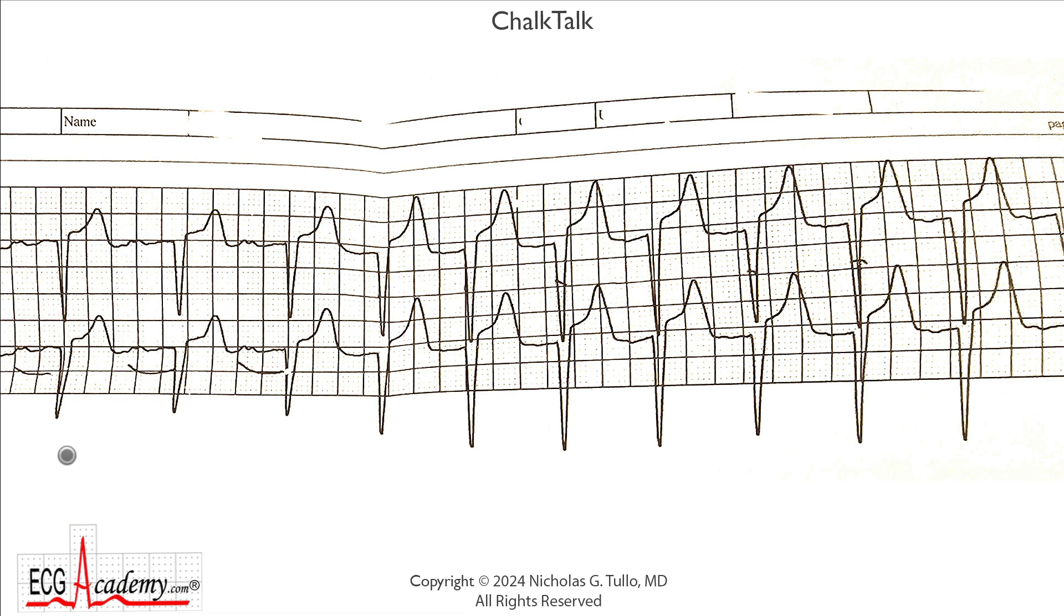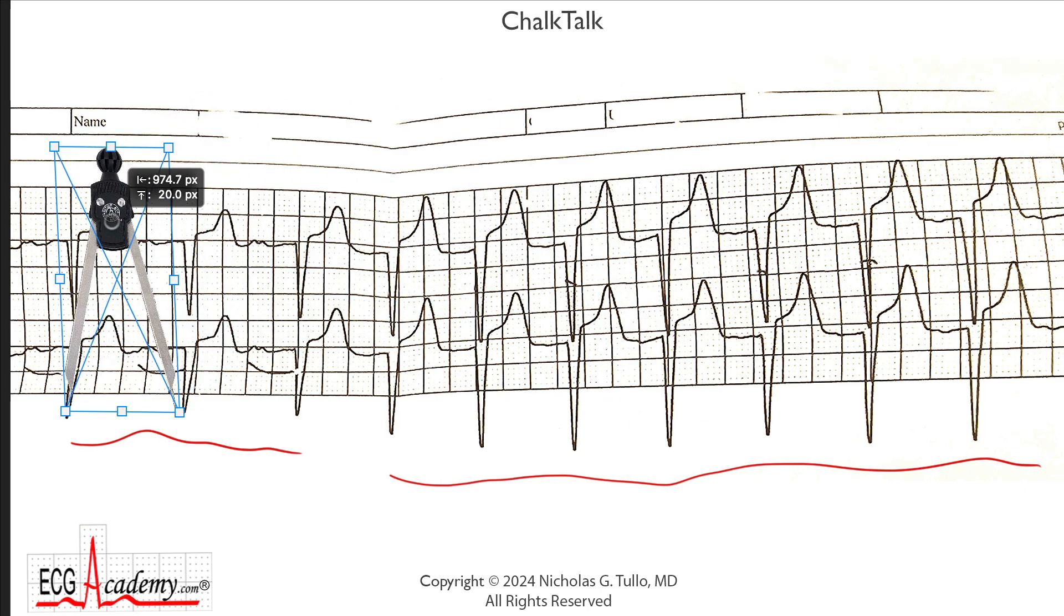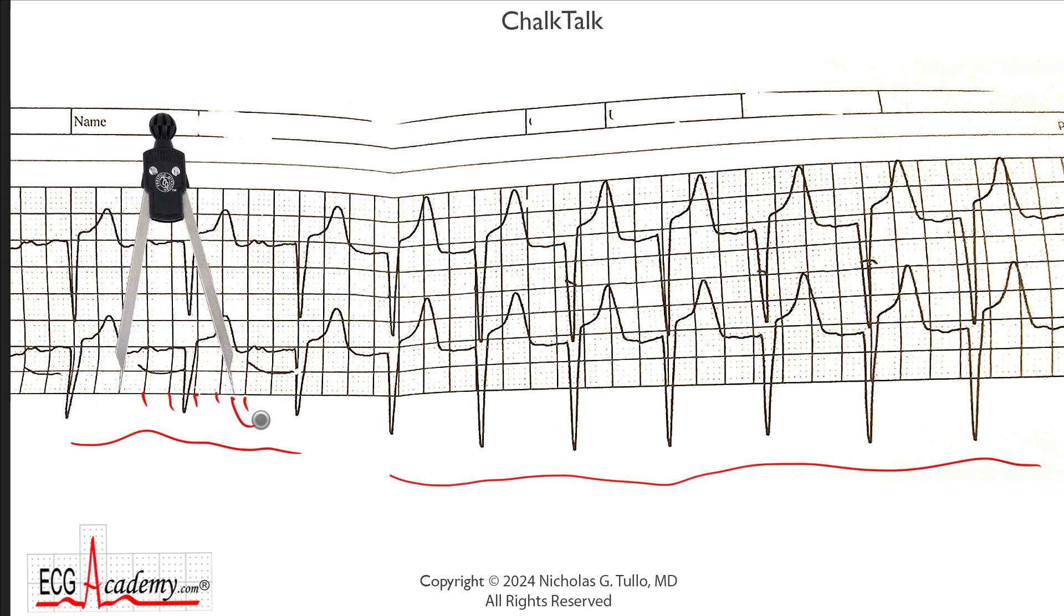When you look at the whole strip, you can see there are three beats on this side, and then the QRS morphology appears to distinctly change for the remaining seven beats. There's also a difference in the rate. If we bring a pair of calipers over to the left side and drag them to the grid, the rate here may be about 68 beats per minute or thereabouts.